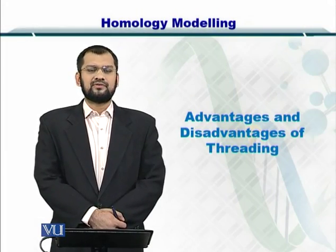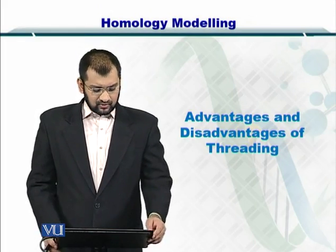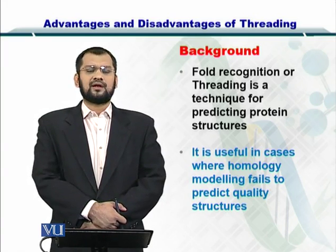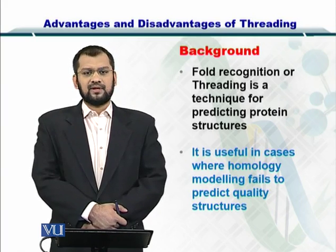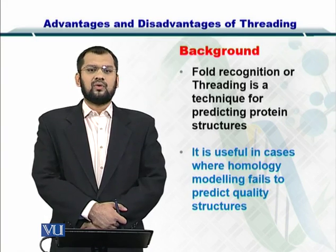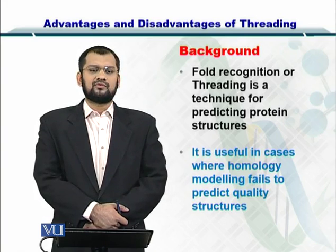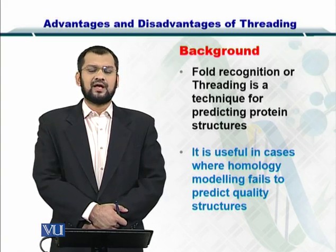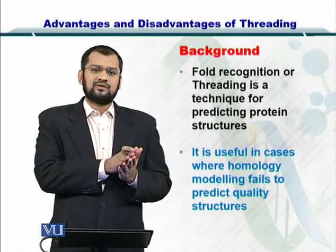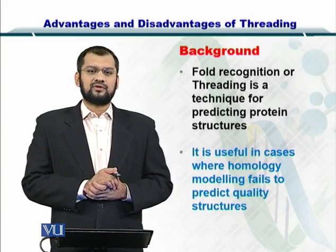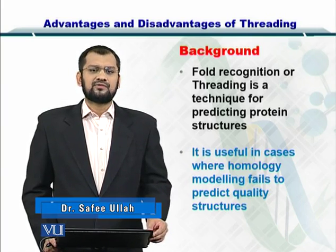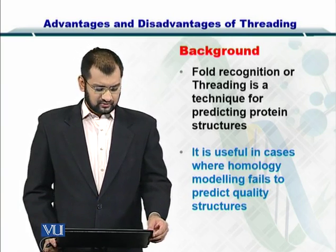Dear students, now we are going to discuss the advantages and disadvantages of threading. Threading, or fold recognition as it is also known, is a process by which you can predict the tertiary structures of proteins by looking at the sequence of a protein and comparing it with a template. If you wanted to predict a protein's structure using threading, you would compare the secondary structures from that sequence with the fold database, arriving at the best matches for secondary structures to thread onto the sequence. This is very useful in cases where homology modeling fails, specifically where you have low alignment and identity — also known as the twilight zone.